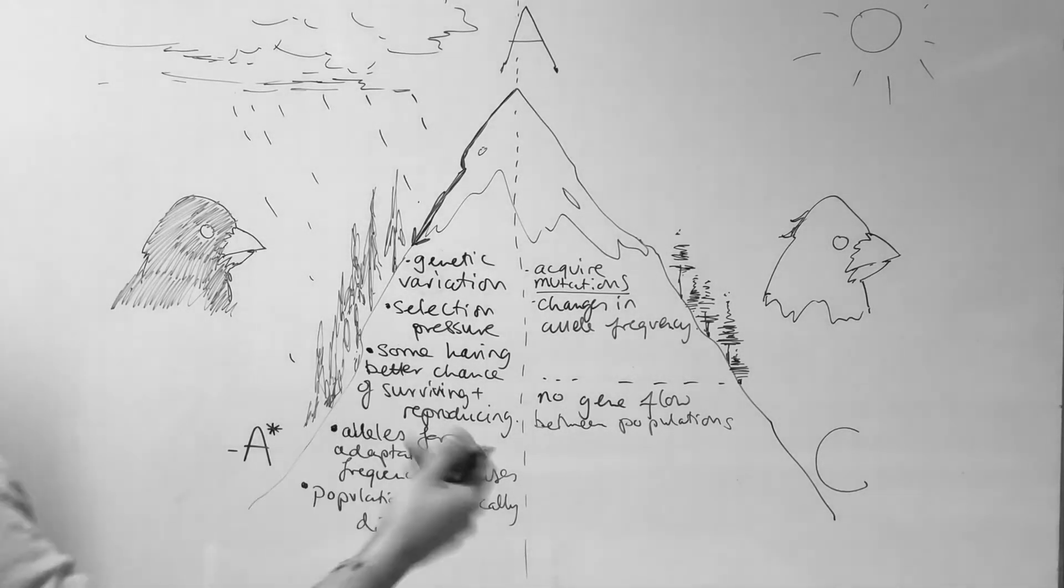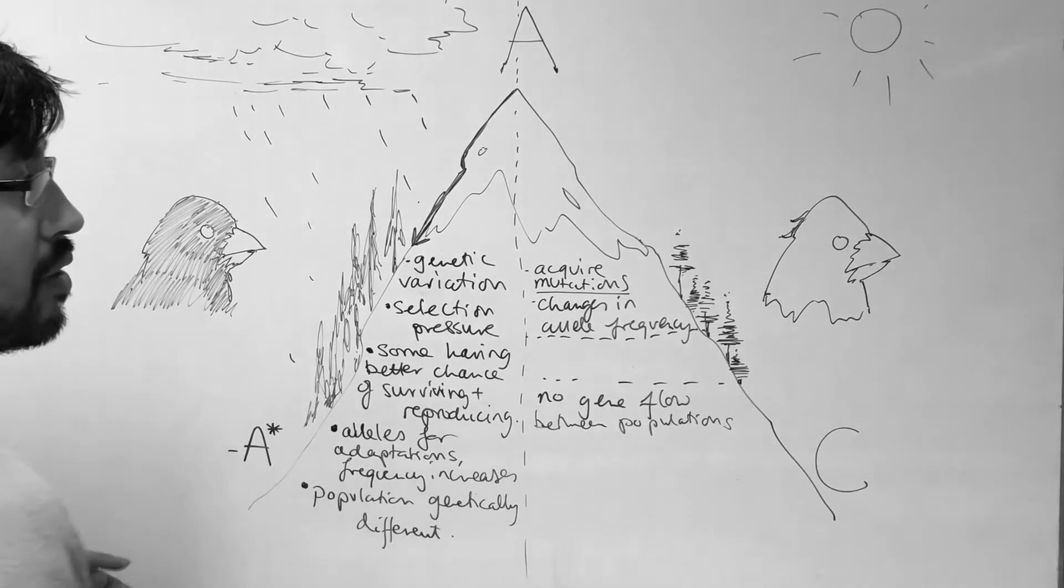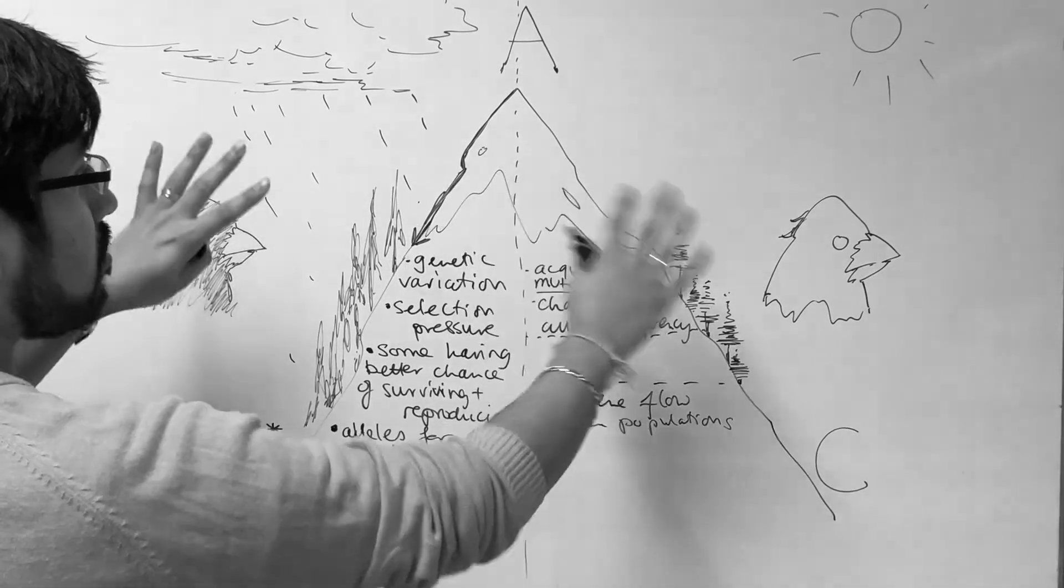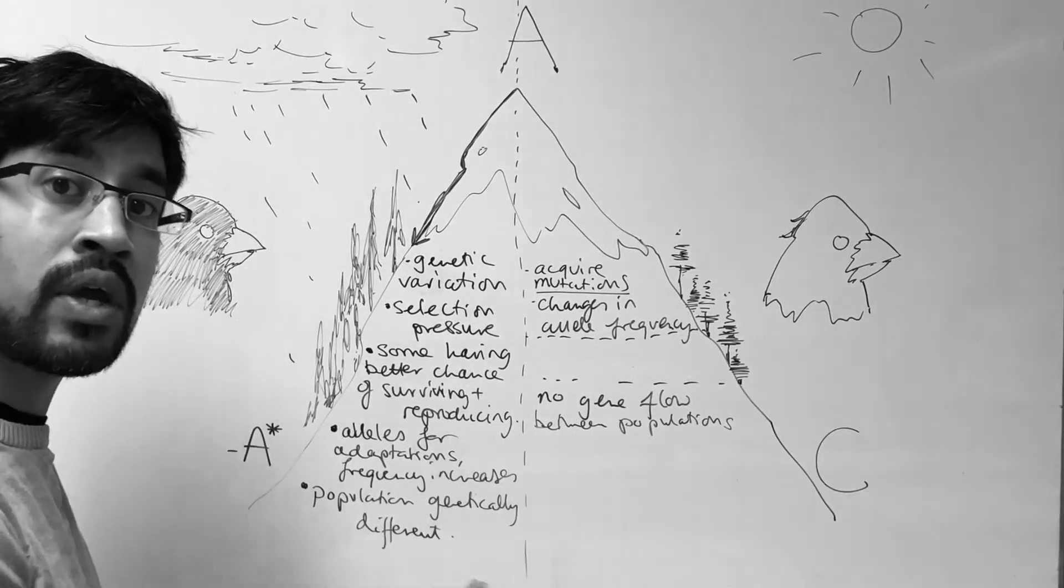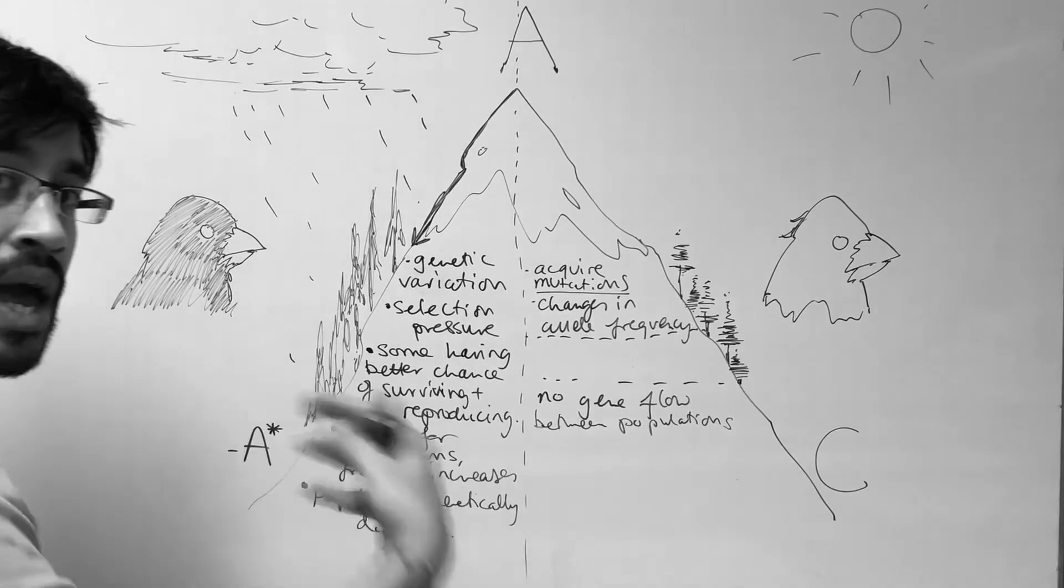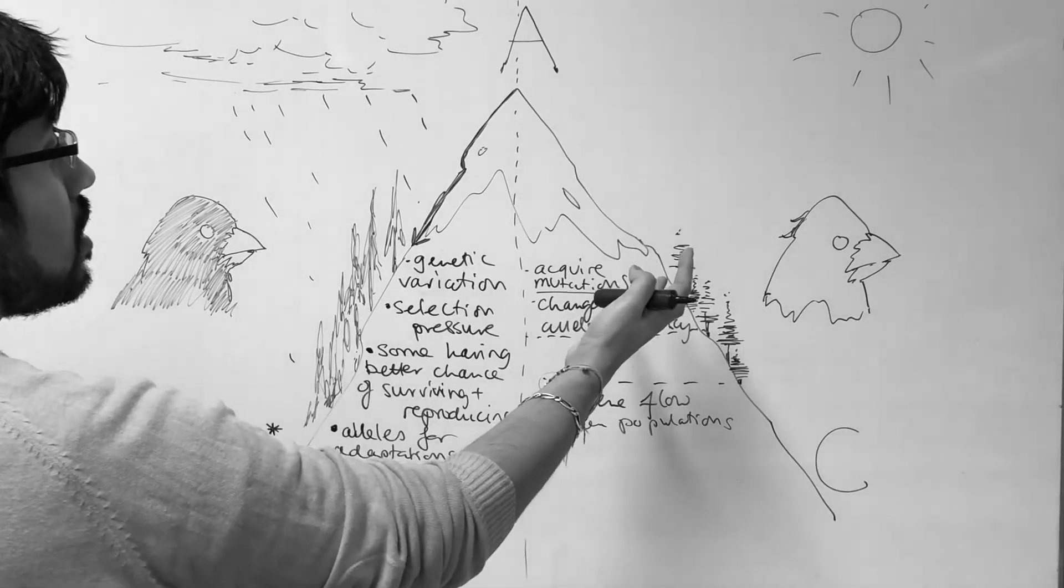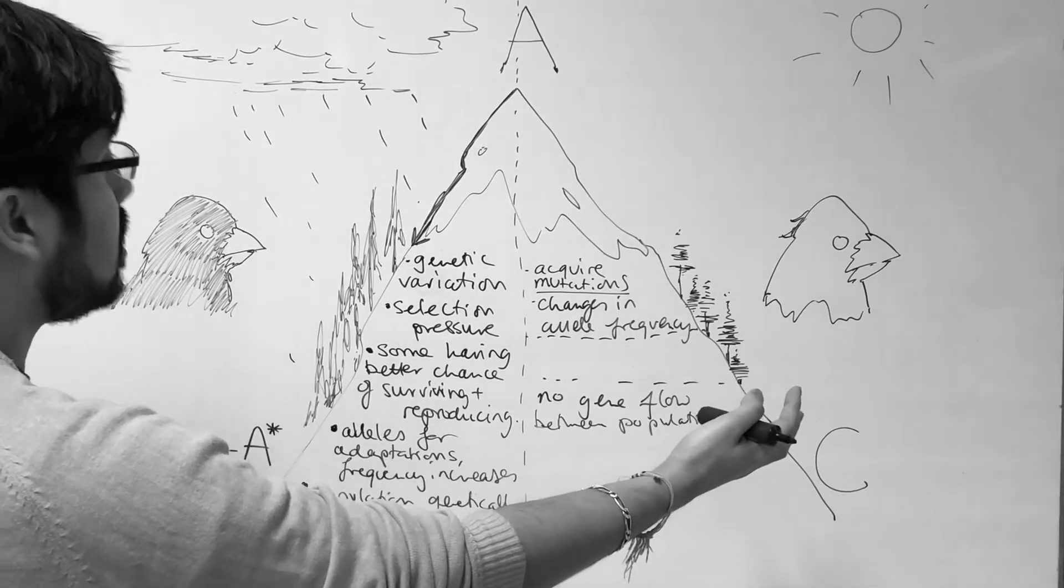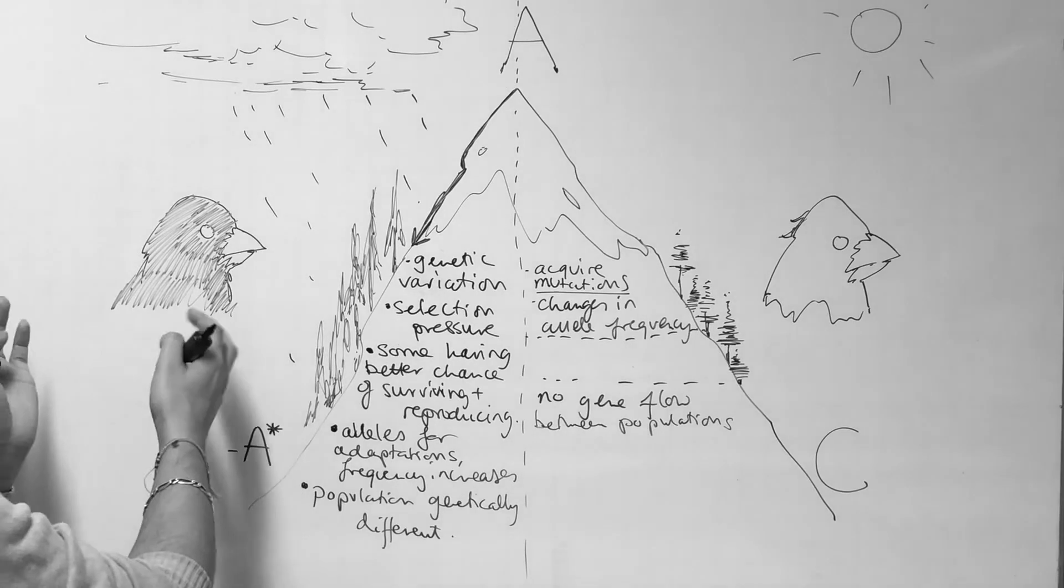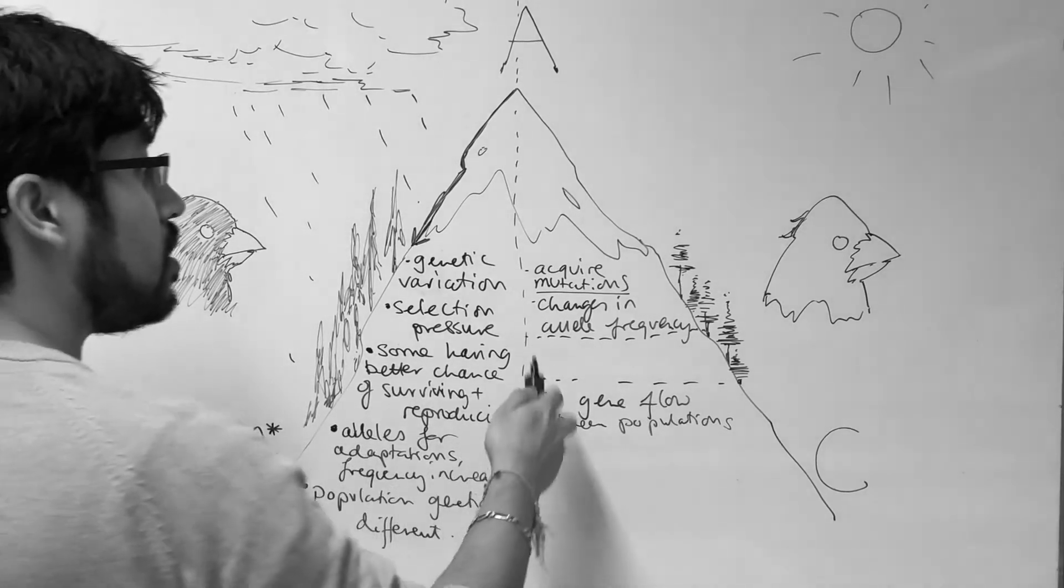Now, what can increase this is the geographical barrier. So if there's a geographical barrier involved, what can happen is that because the geographical locations are different, the selection pressures are going to be different. And if the selection pressures are different, then this drives more genetic difference. Because this population is adapting to different conditions, so they're acquiring different genetic changes to this population, which are trying to adapt to different conditions. So the genetic changes that they're accumulating via this process is different.